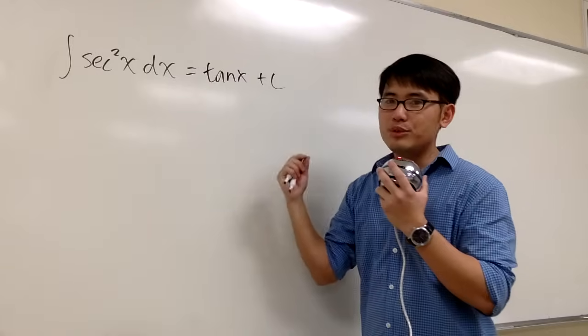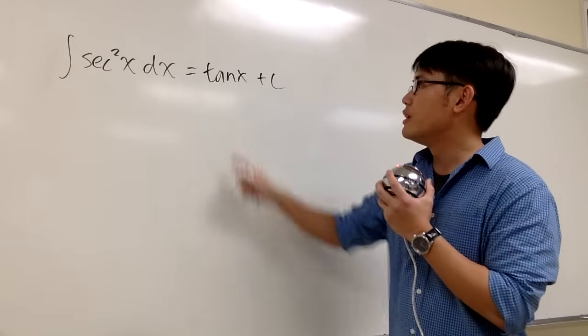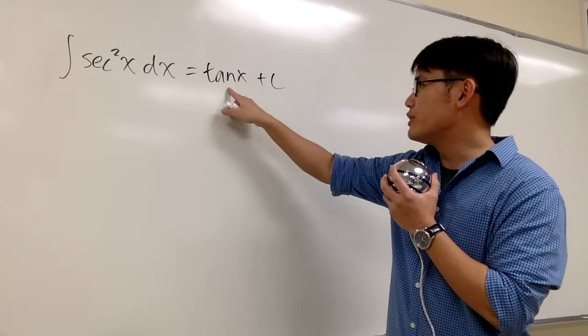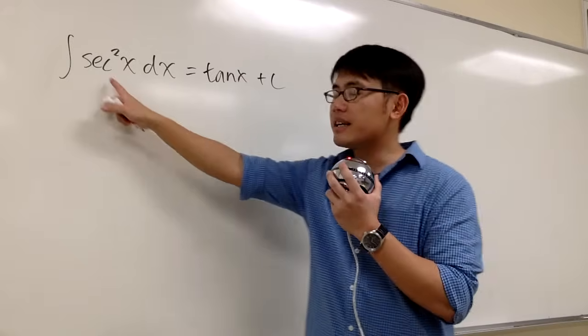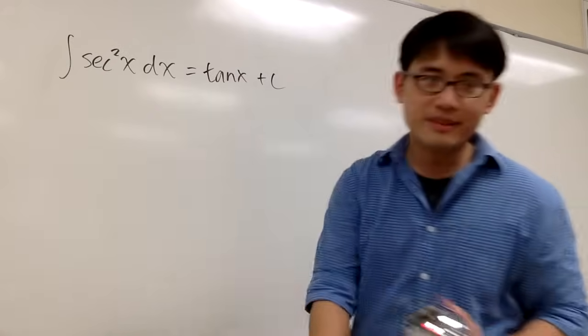Why? Because you have to know your derivative table really well. The derivative of tangent x is exactly secant squared x, and we are done. That's it.